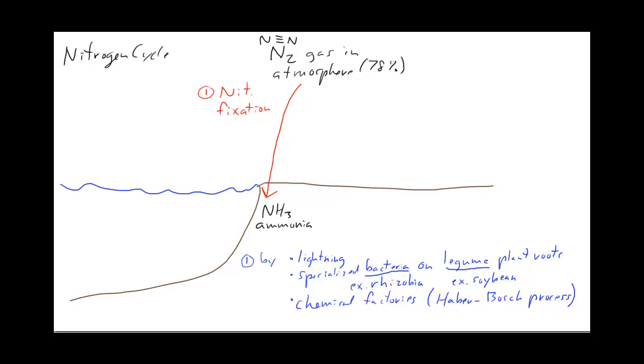Back to the cycle here. The next step in the cycle is for this ammonia to be turned into NO3 nitrates. These nitrates are a form of nitrogen that living things can use. We can't directly use ammonia, so it has to be first turned into nitrate.